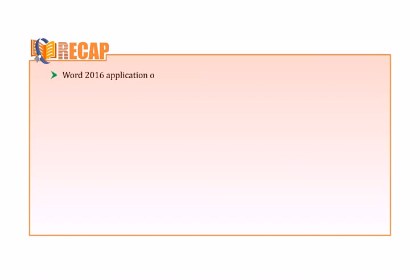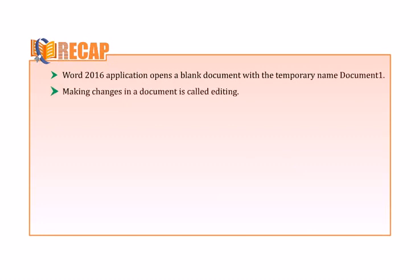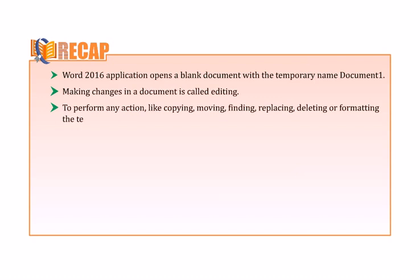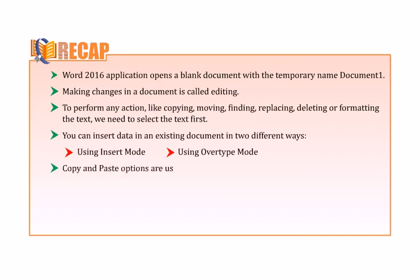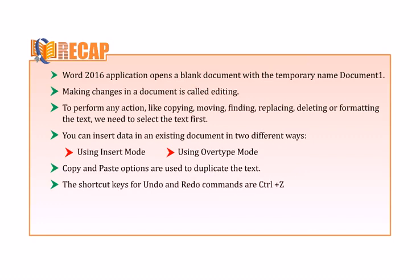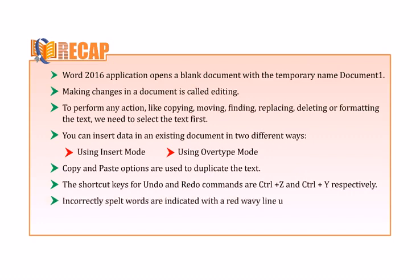Quick recap: Word 2016 opens a blank document with the temporary name Document 1. Making changes in a document is called Editing. To perform any action like copying, moving, finding, replacing, deleting or formatting the text, we need to select the text first. You can insert data in two ways: using Insert Mode or Overtype Mode. Copy and Paste options are used to duplicate text. Shortcut keys for Undo and Redo are Ctrl+Z and Ctrl+Y respectively. Incorrectly spelled words are indicated with a red wavy line; grammatical errors with a green wavy line.